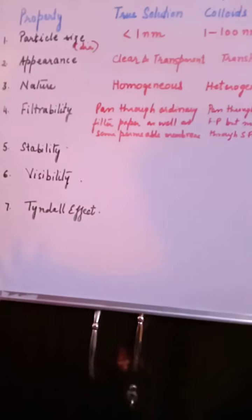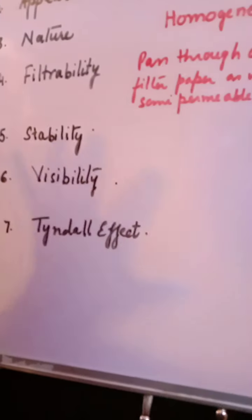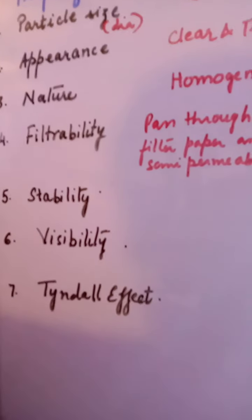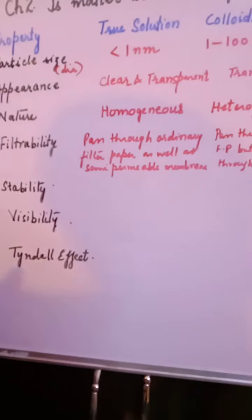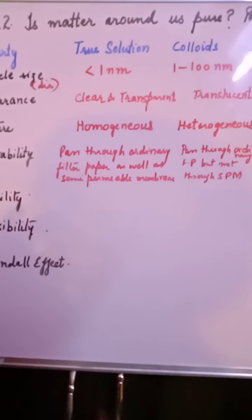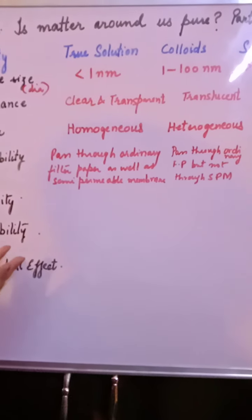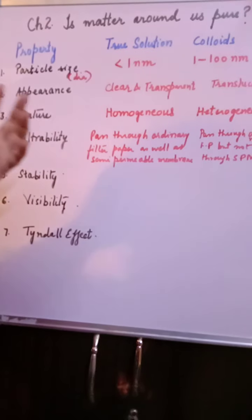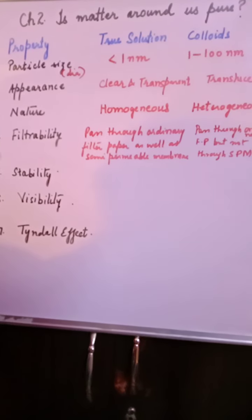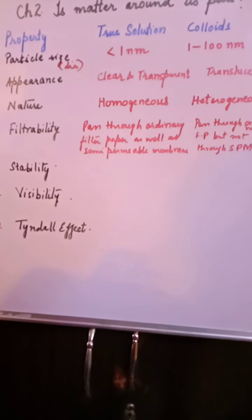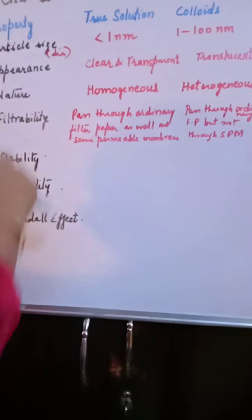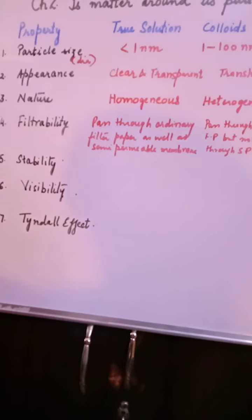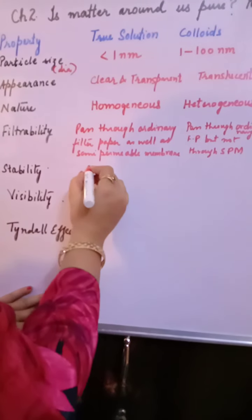Now stability — what does this term mean? If you prepare a mixture, leave it undisturbed for some time, and observe no change, the mixture is stable. If there is a change, it is unstable. In case of true solution, if you prepare sugar or salt solution in water, you will find it the same throughout — so true solution is stable.